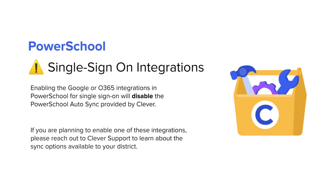PowerSchool has single sign-on integrations for both Google and Office 365. Please note, if your district chooses to enable either of these integrations, the AutoSync for Clever will be disabled. If you're planning to enable one of these integrations, please reach out to our support team to learn about the sync options available to your district.